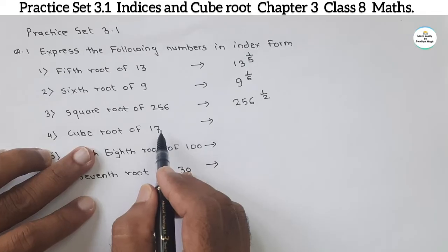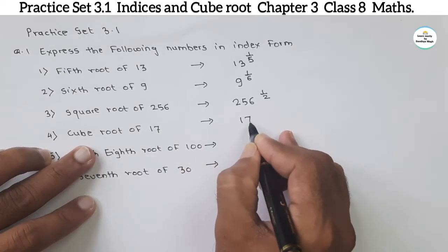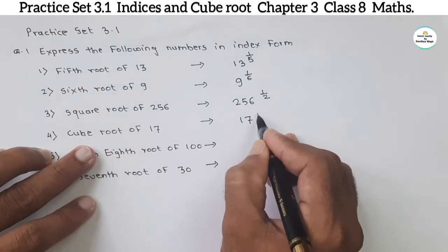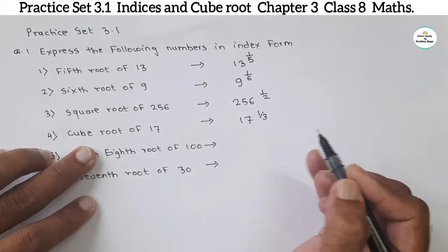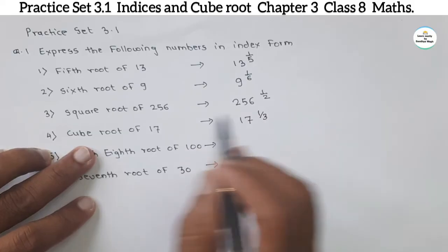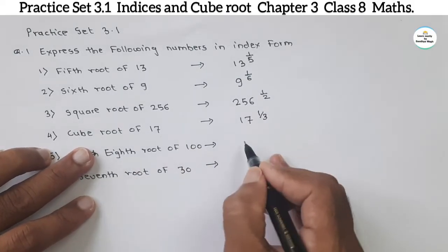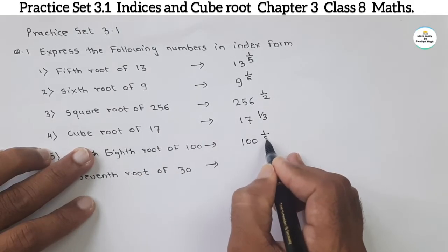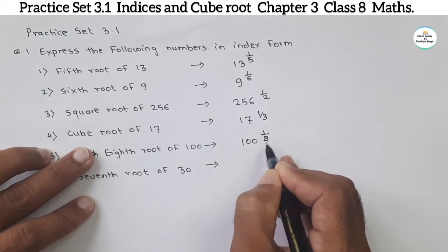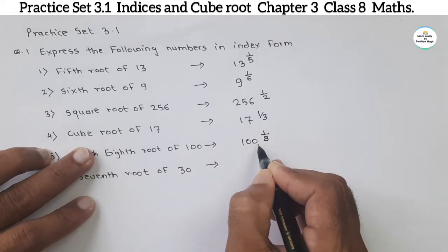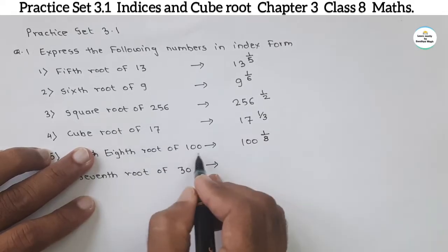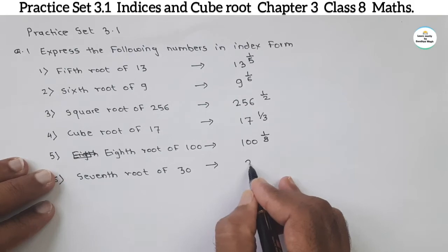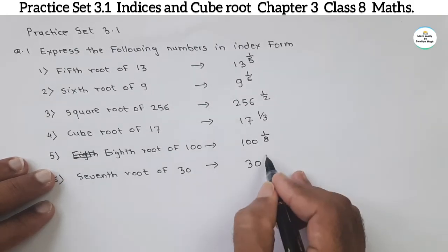The next one: cube root of 17. Here, 17 is the base and cube means 3, but since it is written as a root, we write 1 by 3. So the index form is 17 raised to 1 by 3. Similarly, the 8th root of 100 — base is 100, root is 8th, so the power is 1 by 8. The index form is 100 raised to 1 by 8. The last one is the seventh root of 30 — 30 is the base and 1 by 7 is the power, giving 30 raised to 1 by 7.